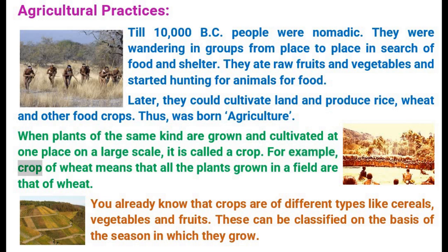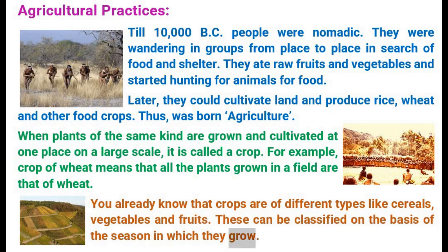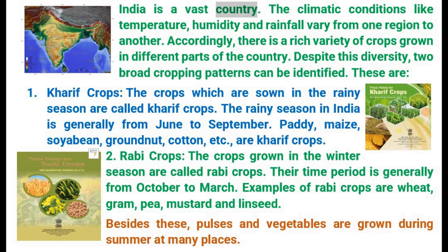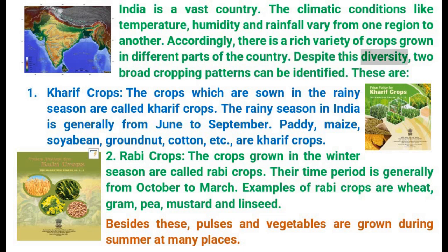For example, a crop of wheat means that all the plants grown in a field are that of wheat. Crops are of different types like cereals, vegetables and fruits. These can be classified on the basis of the season in which they grow. India is a vast country. Climatic conditions like temperature, humidity and rainfall vary from one region to another. Accordingly, there is a rich variety of crops grown in different parts of the country. Despite this diversity, two broad cropping patterns can be identified.